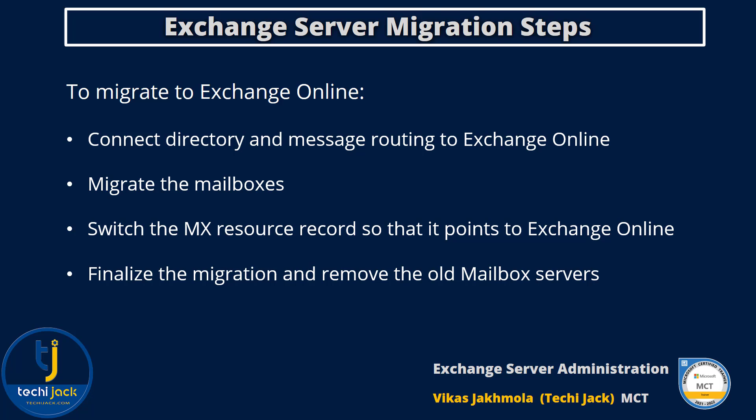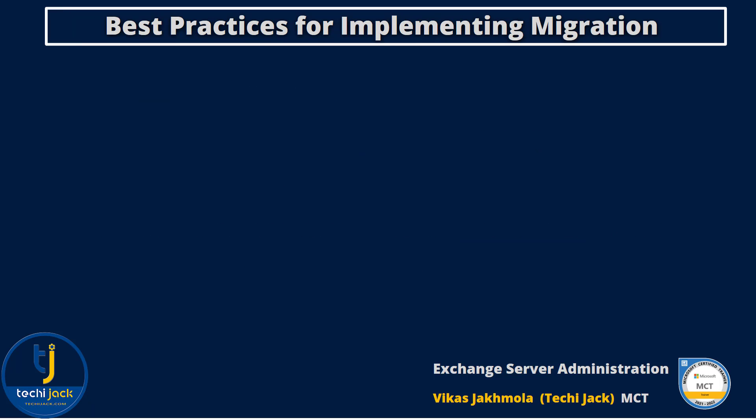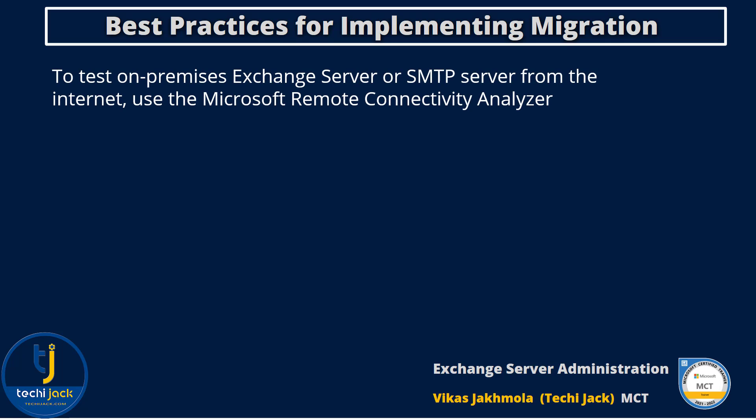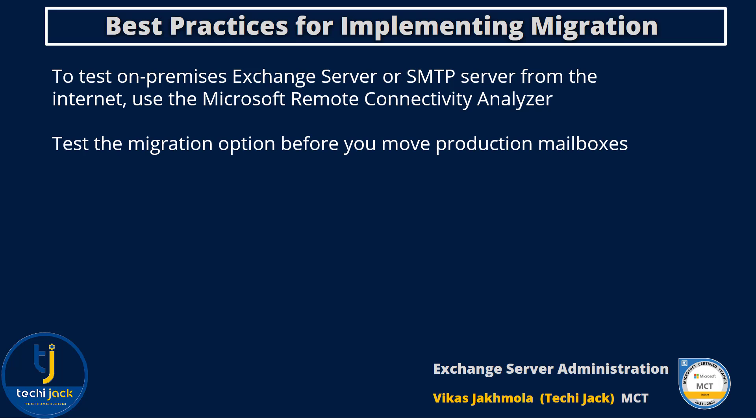Let's also see the best practices for implementing migration. When you implement migration to Exchange Online, you should remember best practices such as testing your on-premises Exchange Server or SMTP server from the internet using the Microsoft Remote Connectivity Analyzer tool. Test the migration option before you move production mailboxes — always try to move a test mailbox first, and then consider moving production mailboxes to Exchange Online.